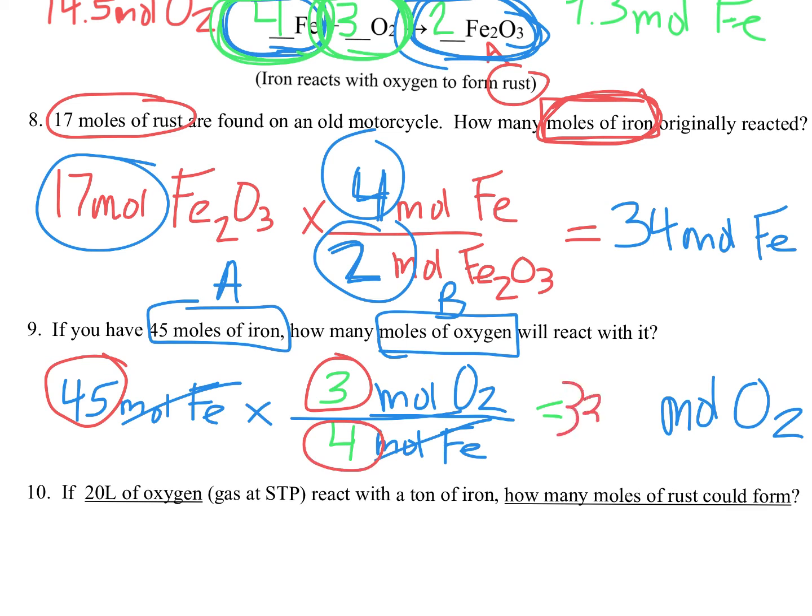I'll be left with units of moles of oxygen, which is what I'm trying to solve for. And if I do 45 times 3 divided by 4, I end up getting about 33.75 moles of oxygen. That's M-O-L. Nice job, science fam.